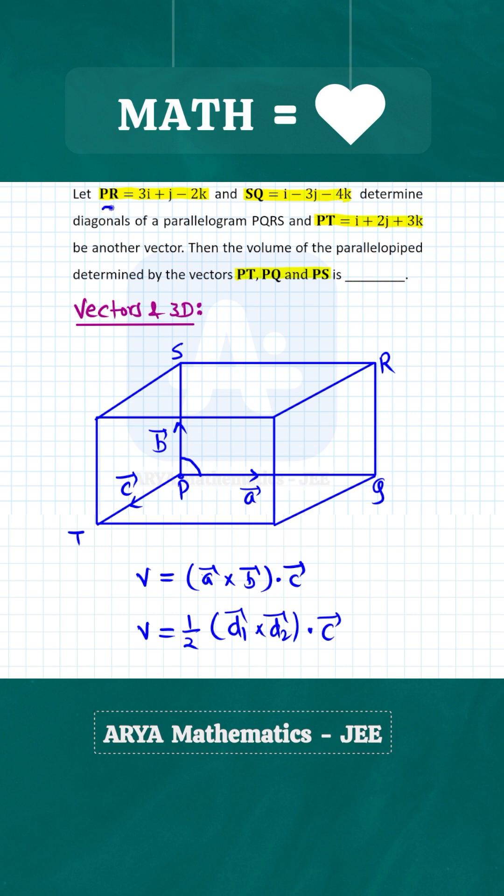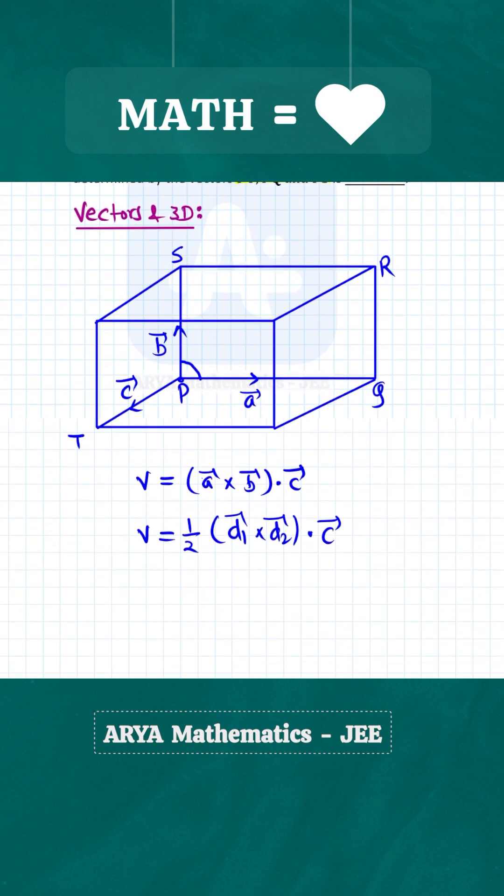So here vector D1 this is PR, and similarly vector D2 this is vector SQ, and vector C this is another vector PT. So now we have to find the scalar triple product of these three vectors, and then volume of parallelepiped will be half of magnitude of the scalar triple product. So now let us calculate the scalar triple product of these three vectors.